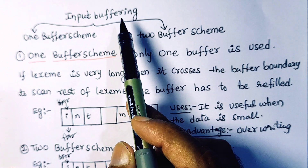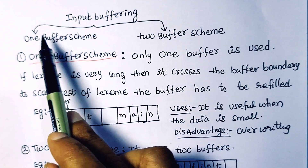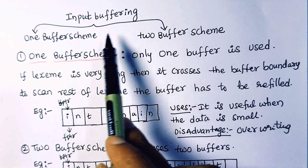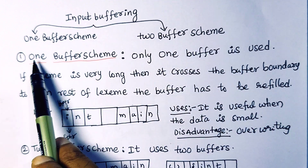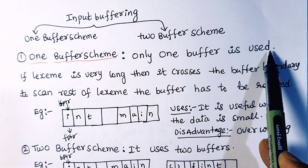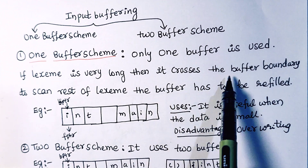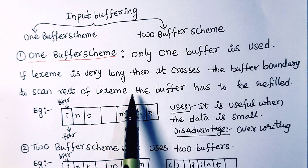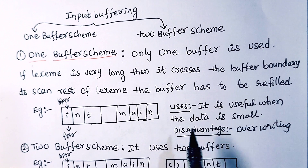There are two mechanisms to perform input buffering. The first one is called the one buffer scheme; the second one is called the two buffer scheme. In the one buffer scheme, only one buffer is used. If the lexeme is very long and crosses the boundary, the buffer has to be refilled to scan the rest of the lexeme.